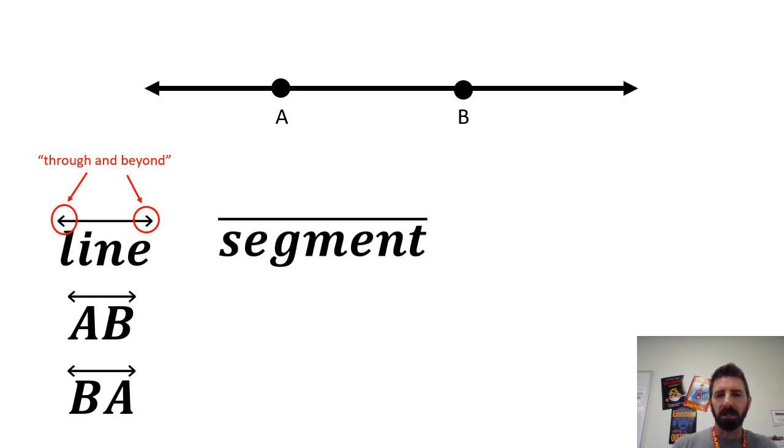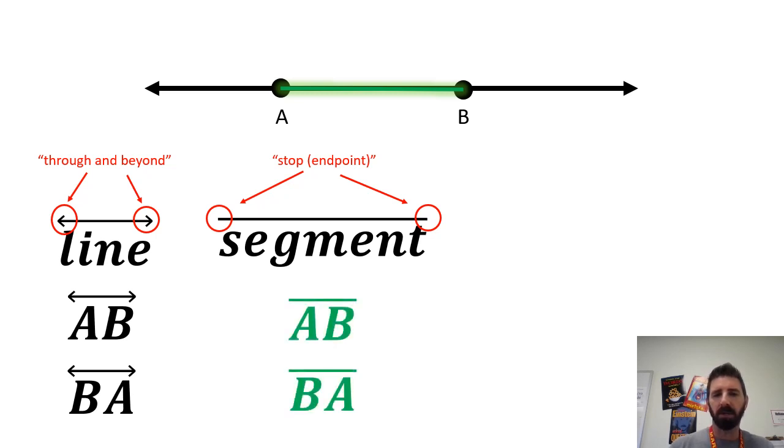When we name segments, we use a line above the name with no arrows at the end. That tells us we have endpoints there and we're stopping at those points. For instance, if we wanted to go just from A to B on that line segment, we could name it segment AB or BA. Notice we use a bar with no arrows because we're stopping at A and stopping at B. There are endpoints there.